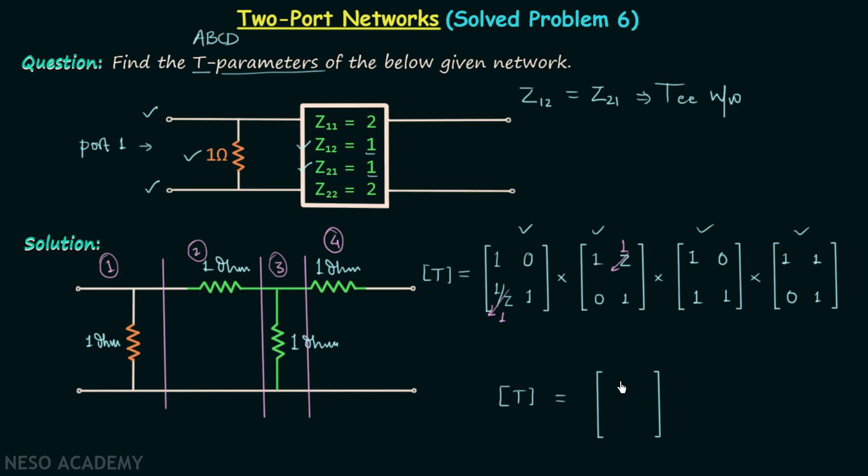And if you commit no mistake, at the end you will have the T-parameters matrix as 2, 3, 3, and 5. So the T-parameters or ABCD parameters are 2, 3, 3, and 5.